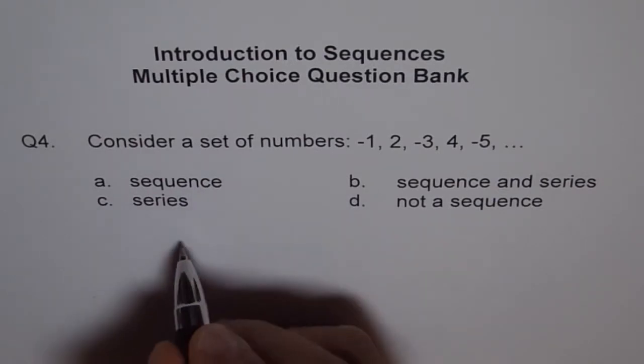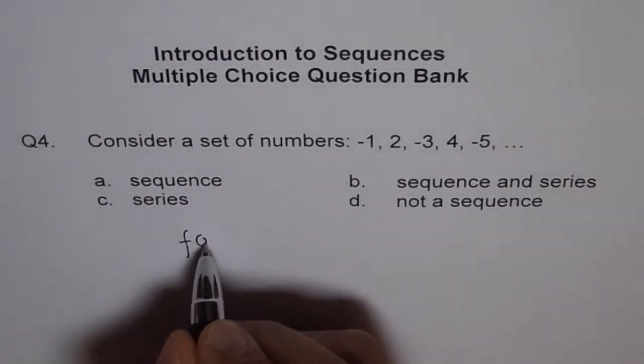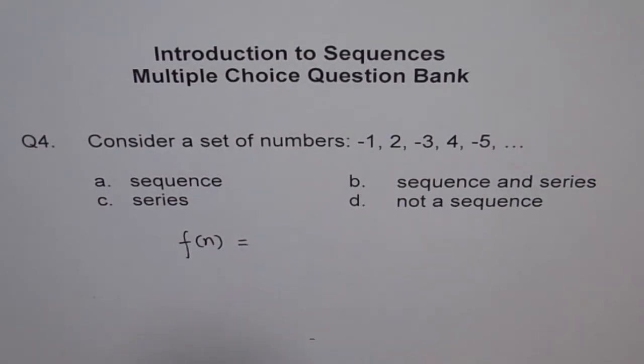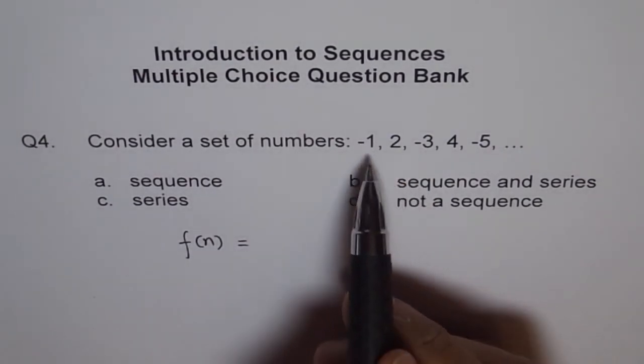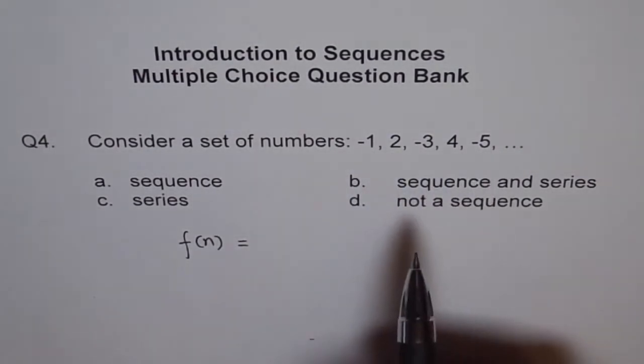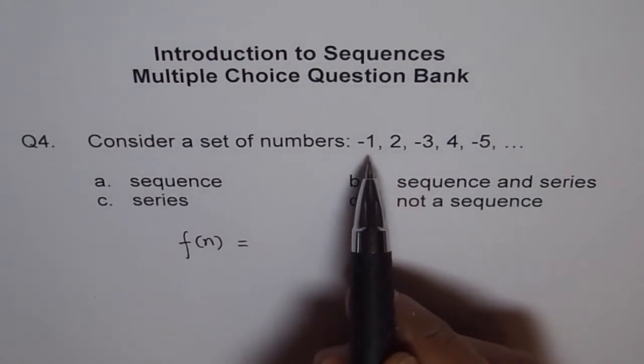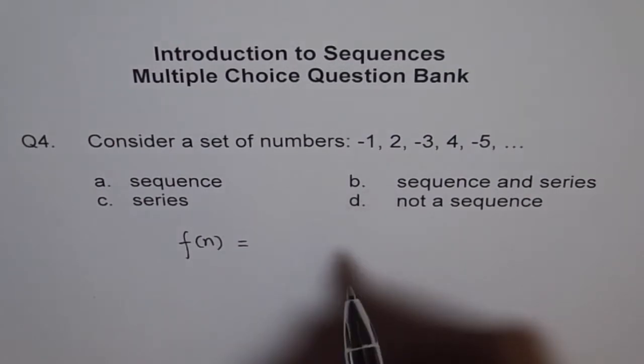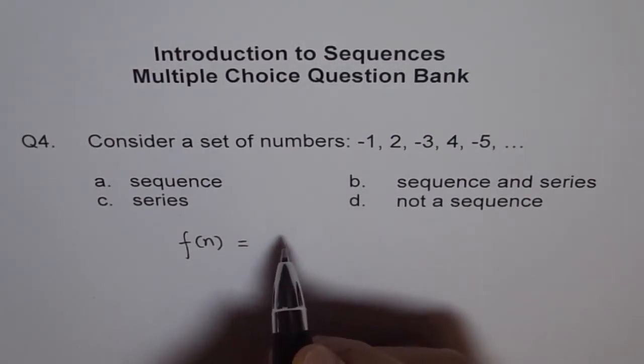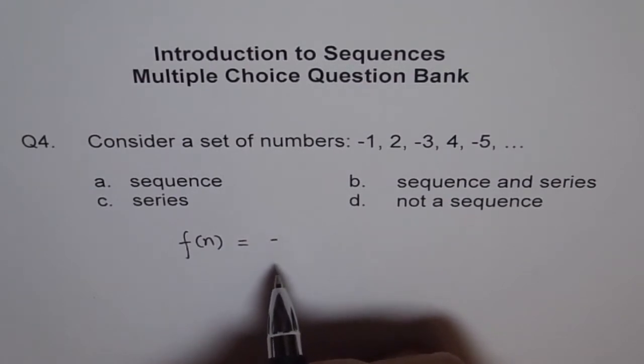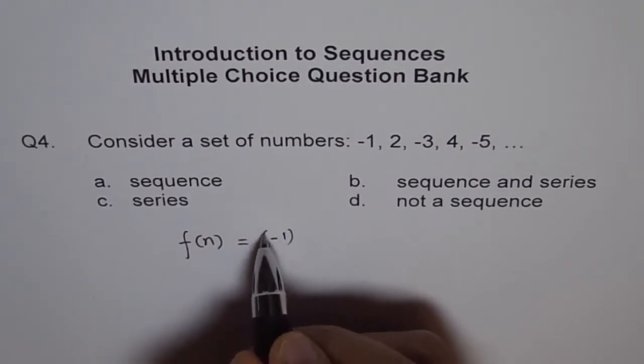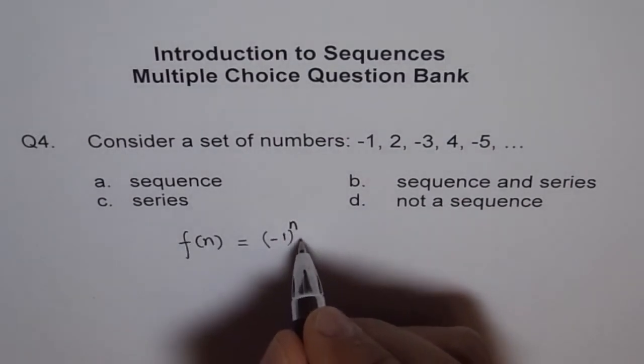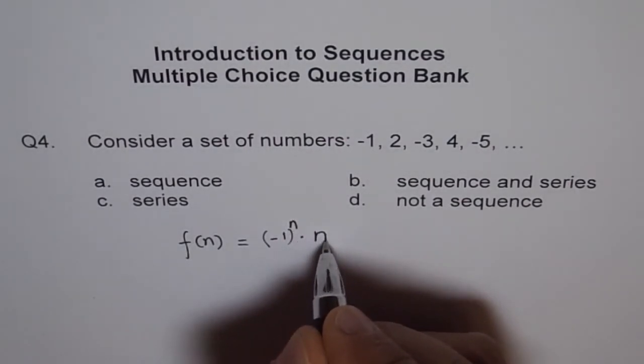For example, I can write this as a function, let's say f(n) equals to... so this is natural numbers, right? 1, 2, 3, 4, 5. The only thing is that 1, 3, 5, the odd numbers, are negative. So I can write this as (-1)^n times n.